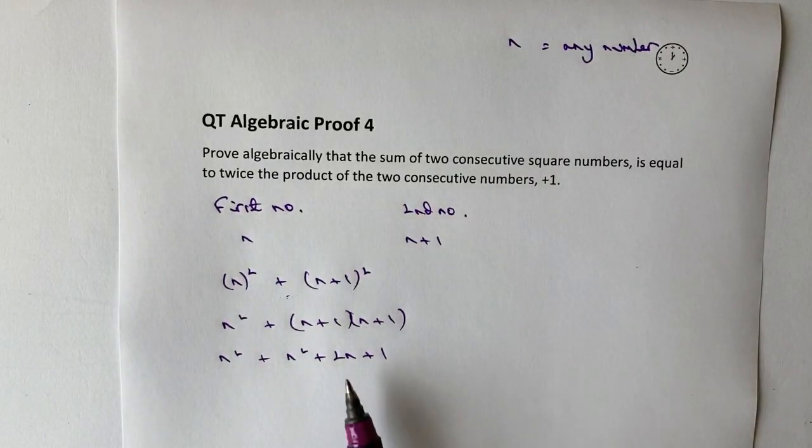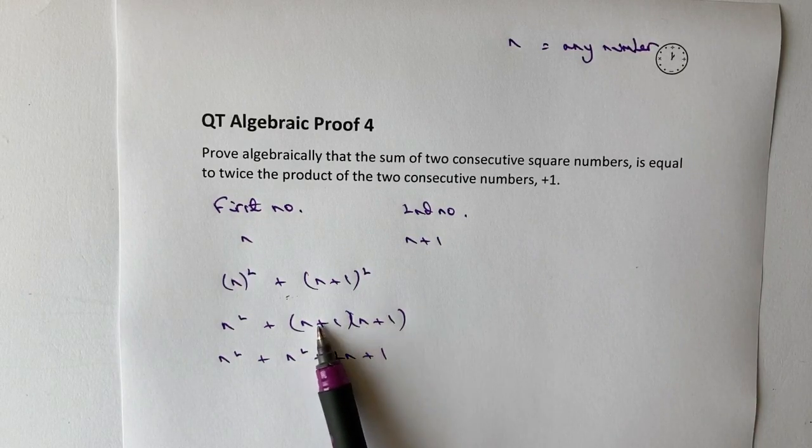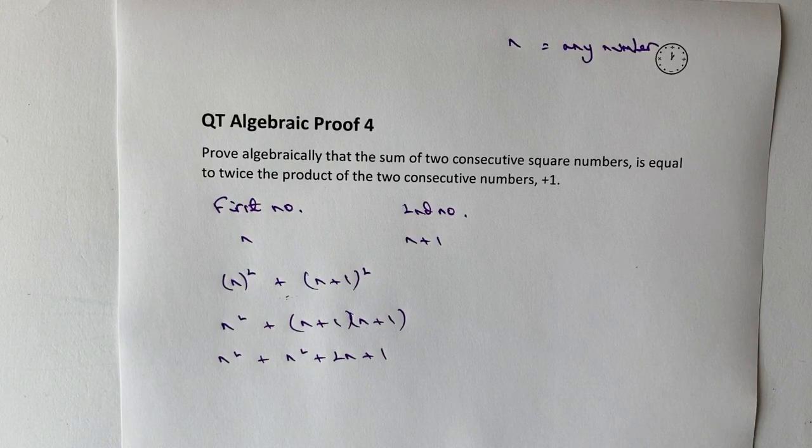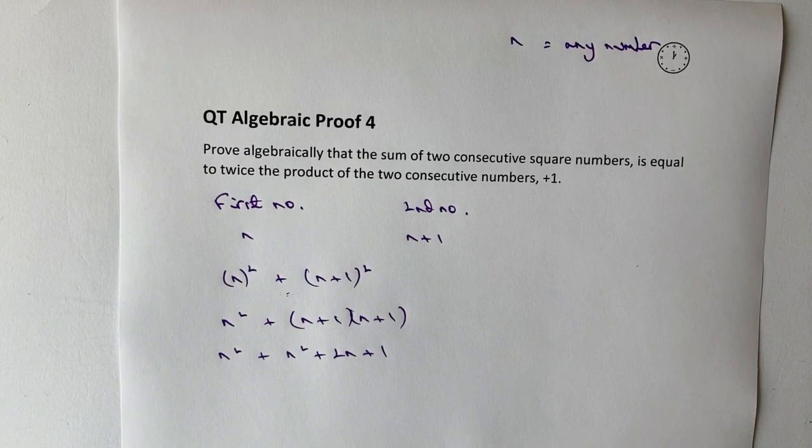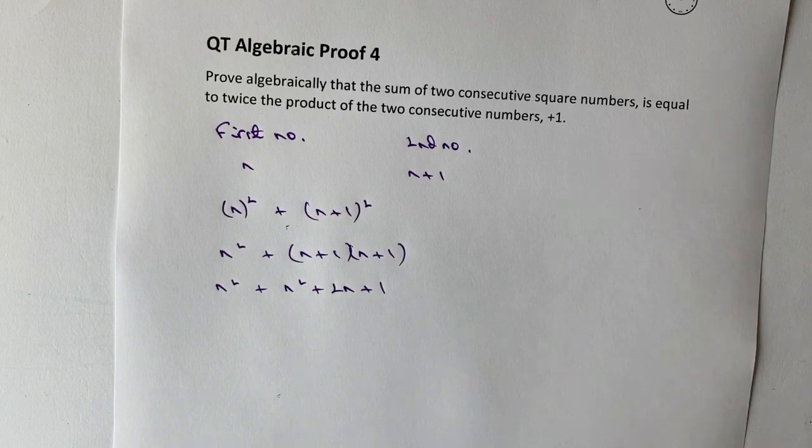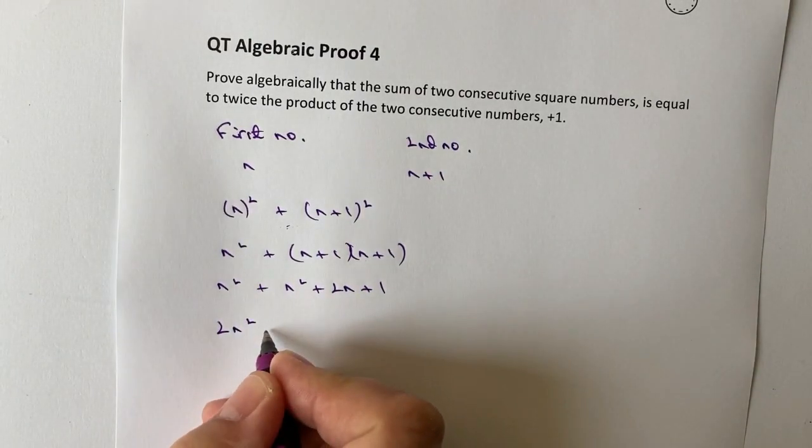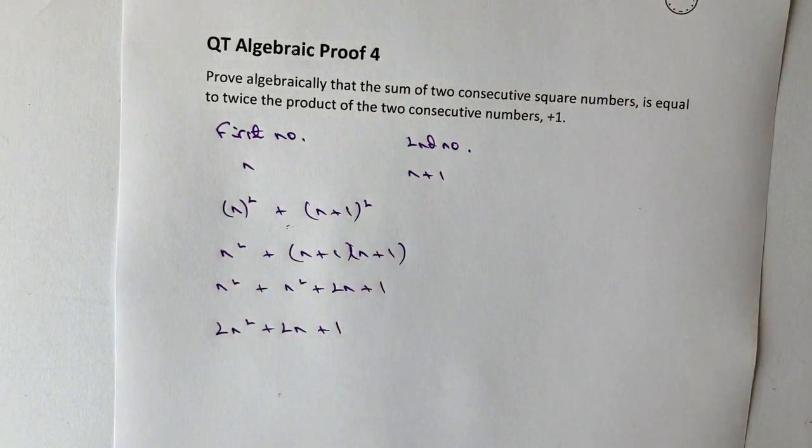Now if you're not sure about what I've done there and how I've gone from that to that, please do have a look at some of the other videos on expanding double brackets in the channel. So let's just tidy everything up. I'm going to get n squared plus n squared is going to be two n squared plus two n plus one.